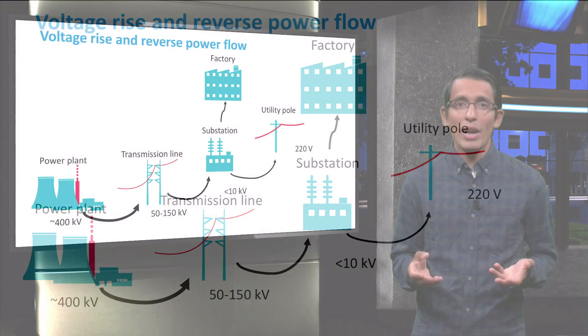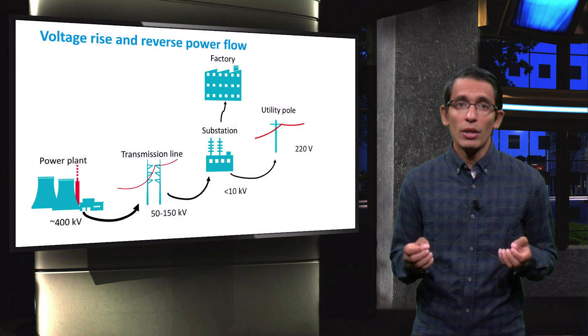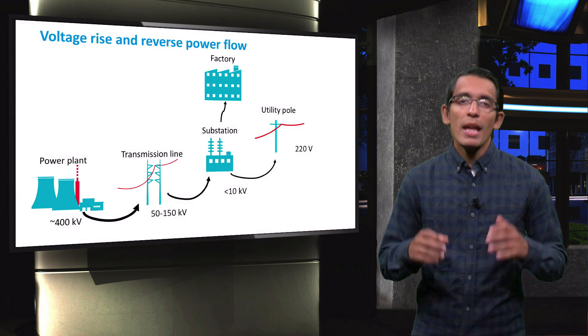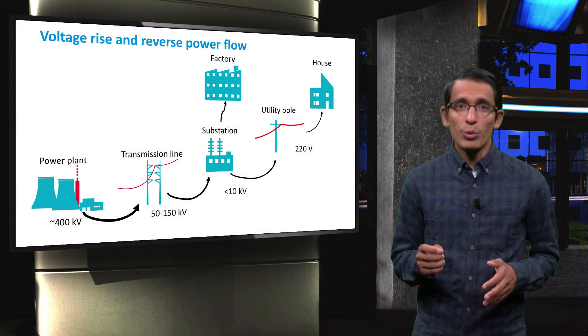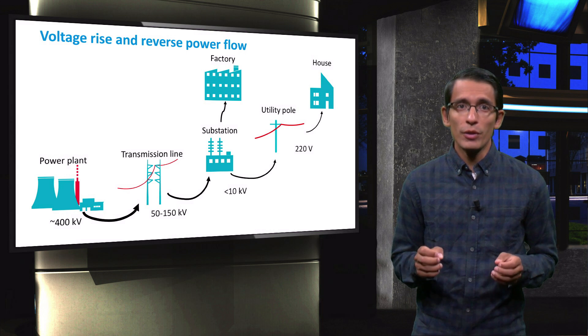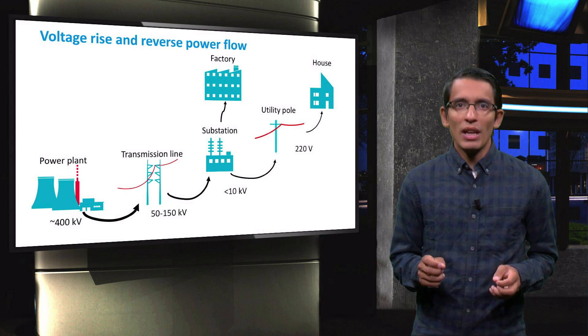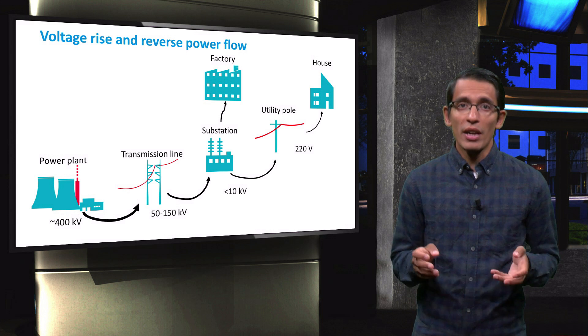Large factories require higher voltage level and higher system reliability. In the last step, households receive power at 220 volts. This is the voltage level that we receive every day in our sockets in Europe.